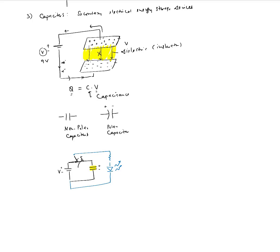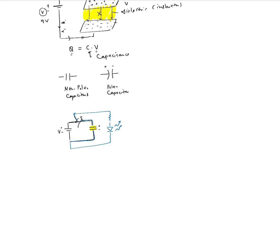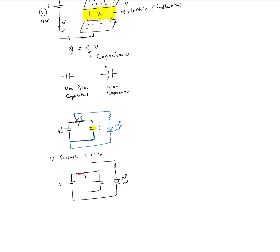When the switch is open, the circuit path changes. The part with the LED is now in the active loop — so we have the voltage from the battery, the switch is open, and this point connects to the LED and back. The capacitor C is also part of this loop. There can be no current flowing through the open branch.